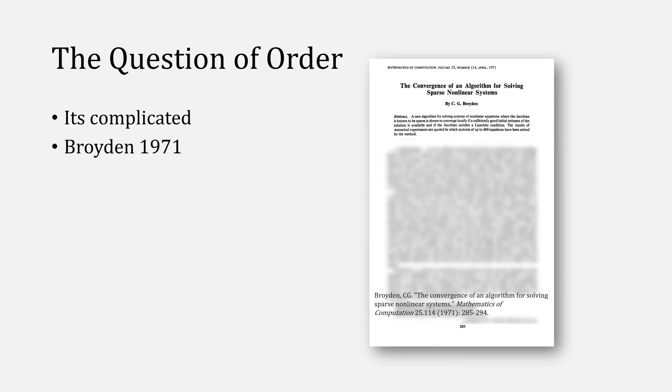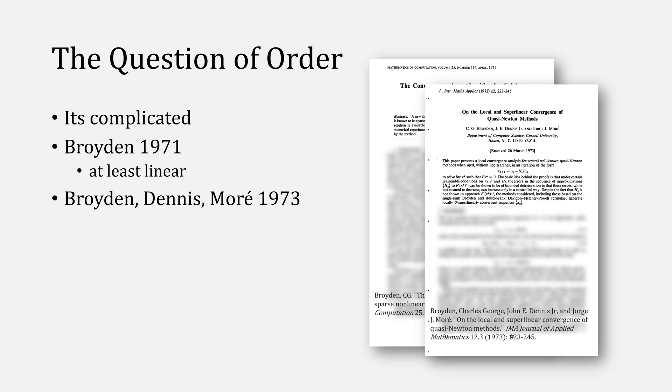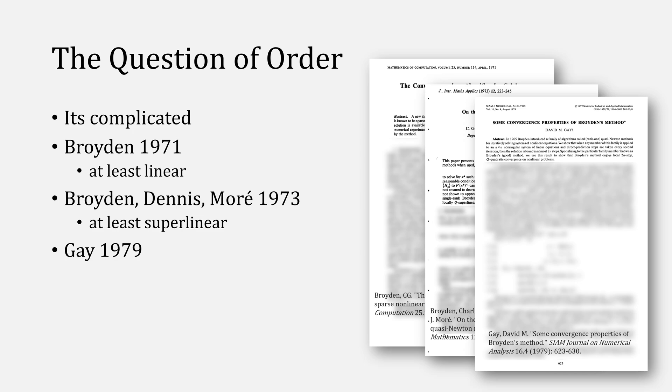Now we come to the topic of order, and it's complicated. In '71, Broyden was able to prove that it was at least linear, and then he and several others were able to prove that it was at least superlinear two years later. And it wasn't until 1979 that Gay was able to prove that the order was quadratic.